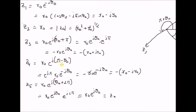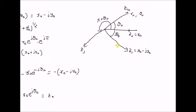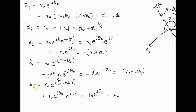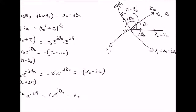z3 is equal to minus of x naught plus j y naught, so it is a mirror image of z naught. The angle is equal to pi plus theta naught in radians. z4 is basically a phase shift of 180 degrees or pi radians on minus theta naught, that is a reflection of z1. Therefore, the angle for z4 is equal to pi minus theta naught. Finally, z5 is equal to z naught — you basically rotate the phasor by 360 degrees and it returns to z naught.